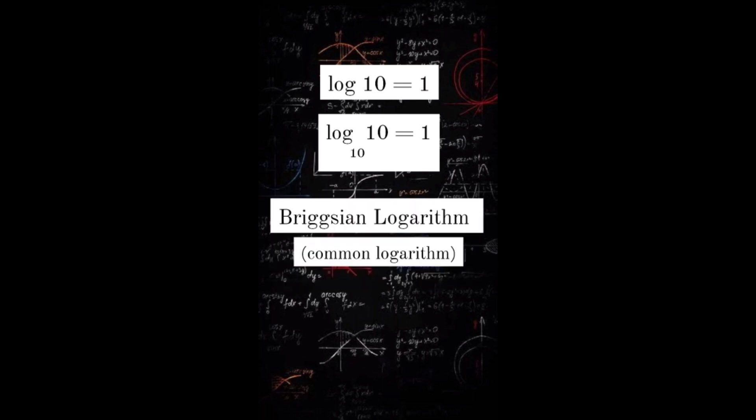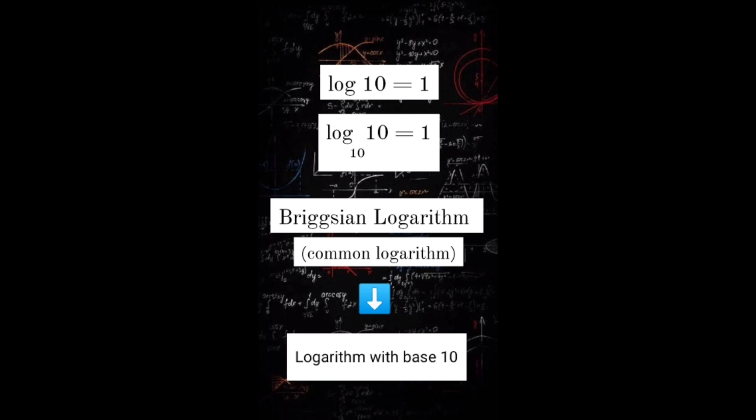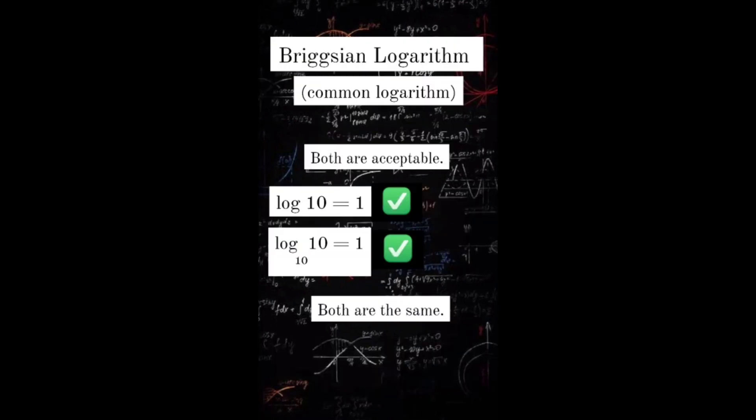This type of logarithm is called Briggsian logarithm or common logarithm. It is a logarithm with base 10. It doesn't matter if you write 10 as the base or not. The value is still the same.